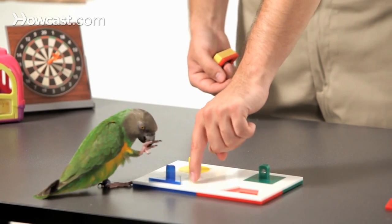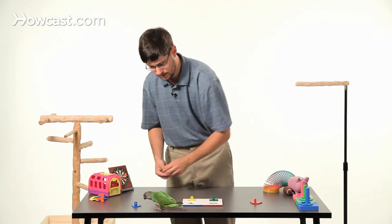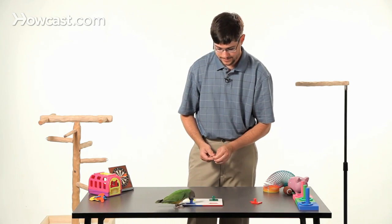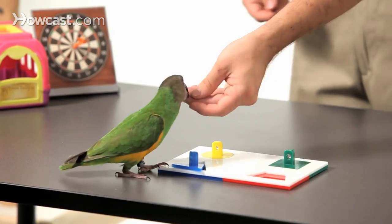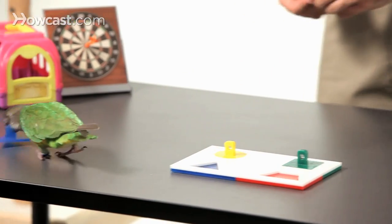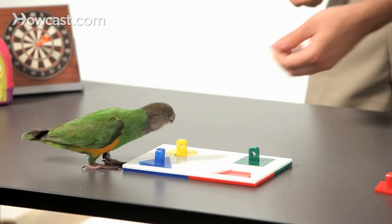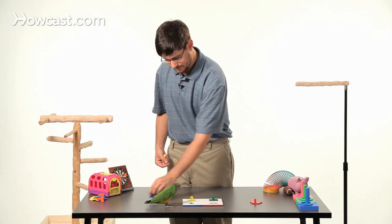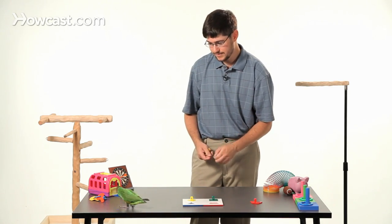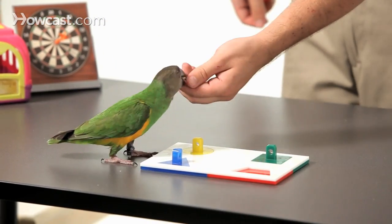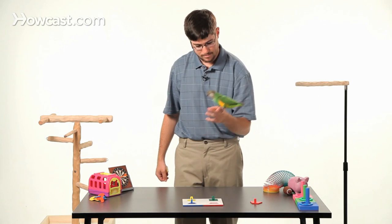When they get it close, even if it's not in all the way but they got it almost right, you reward them for that so they can learn to do it like that. Go fetch. That's good. Let's try it again. Go fetch. Oh, that's much better. Very good. Go fetch. Now you got it in all the way. Very nice. Good bird.